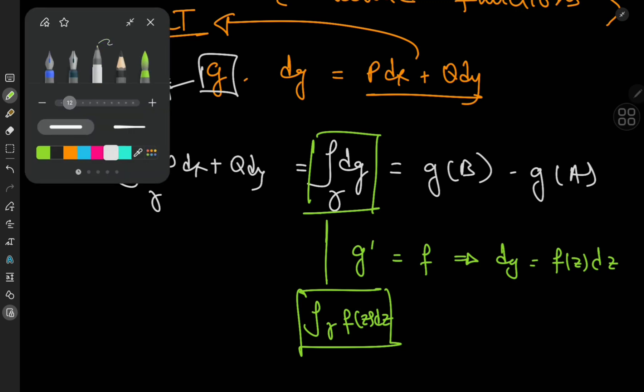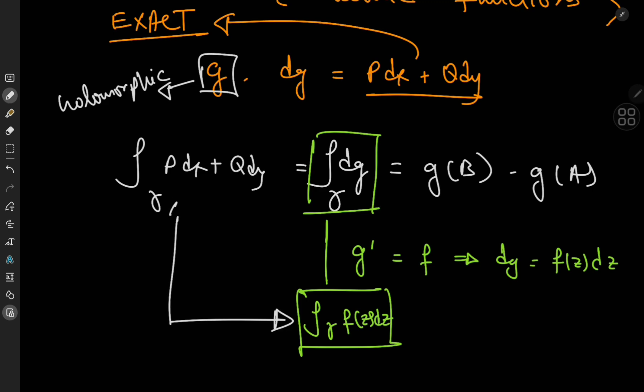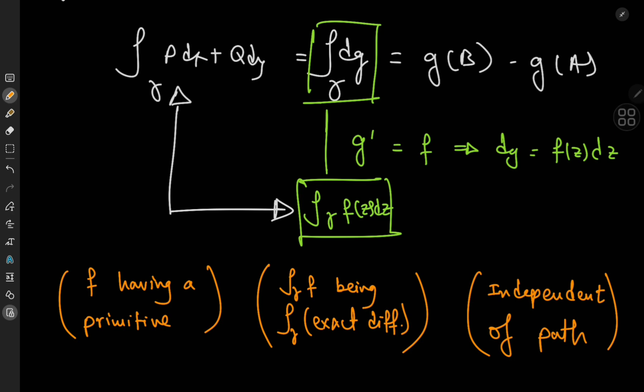Let's join the dots and draw some conclusions. The first thing we notice is the connection between f having a primitive and the integral of f being the integral of an exact differential. The integral picture shows these two are equivalent — exactly the same thing. And we know that f having a primitive implies independence of path.